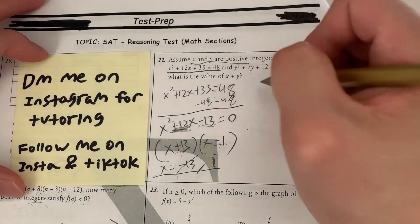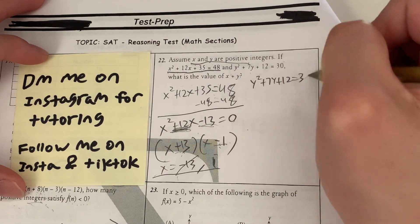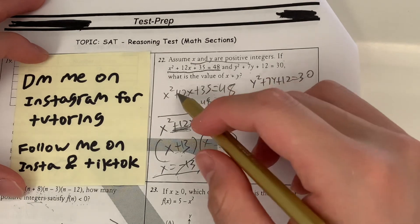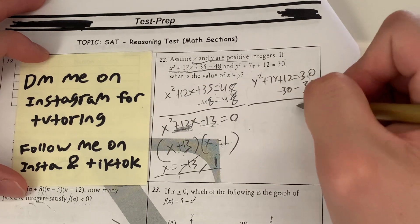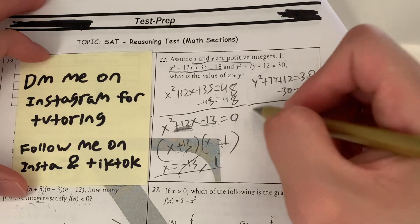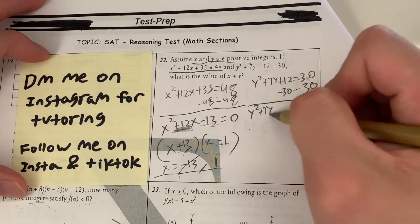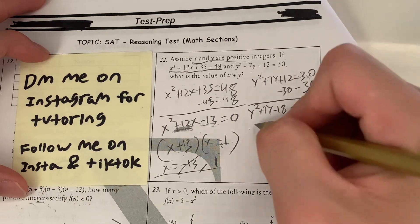Now I do the same thing for y. So I do y² + 7y + 12 = 30. Now what's the first step? Similar to solving for x, I'm going to subtract 30 on both sides to get 0 on one side. Because on the right side, I get 0. 30 minus 30 is 0. On the left side, I get y² + 7y. And then what's positive 12 minus 30? That's giving me negative 18 equals 0.